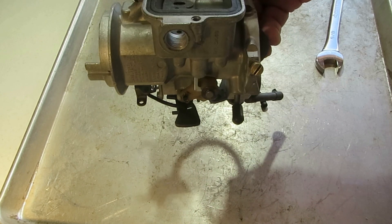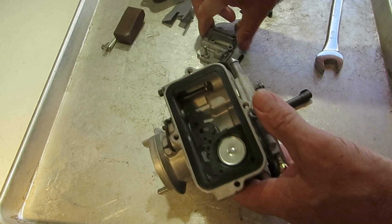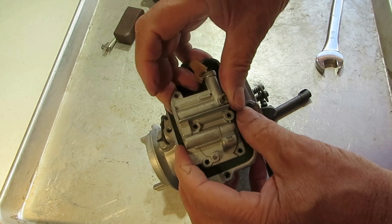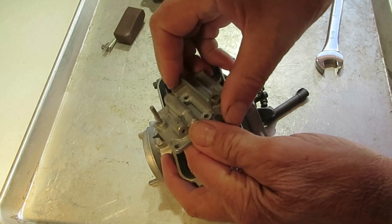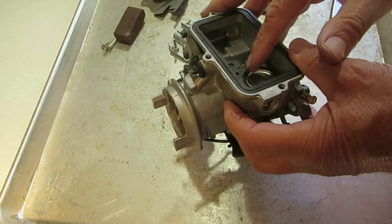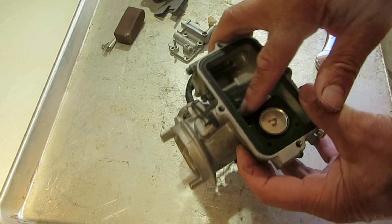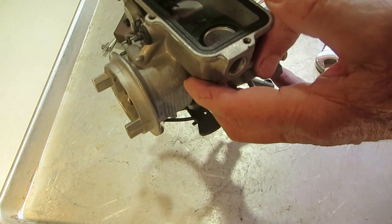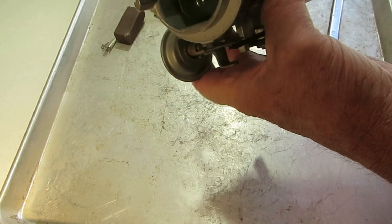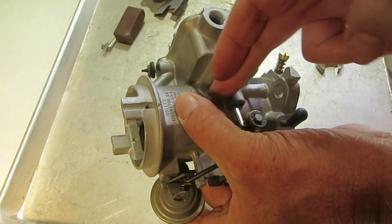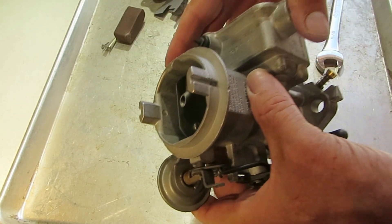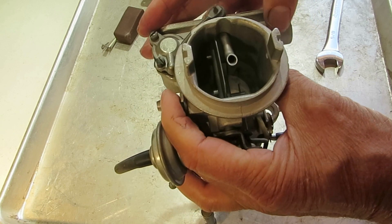First of all, the fuel for the idle goes through the main jet, this one right here, and eventually goes into one of these small holes right here. Inside here is the idle passageway, idle well it's called.